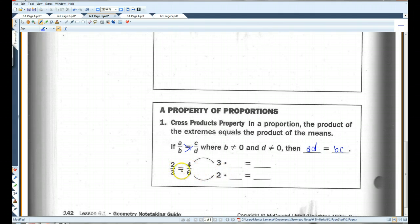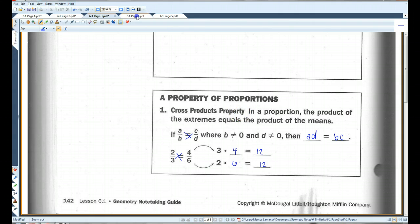So, for example, if we had 2 over 3 equals 4 over 6, we could say 3 times 4, which is 12. 2 times 6, which is also 12.